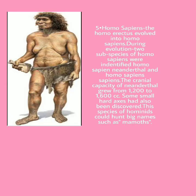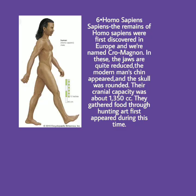Fifth is Homo sapiens. Homo erectus evolved into Homo sapiens during evolution. Two subspecies of Homo sapiens were identified: Homo sapiens Neanderthal and Homo sapiens sapiens. The cranial capacity of Neanderthal ranged from 1,200 to 1,600 cc. Some small hand axes had also been discovered. These hominids could hunt large animals such as mammoths.